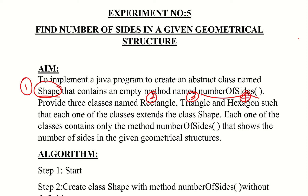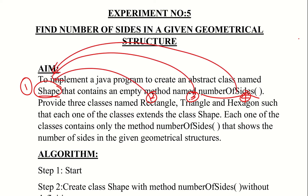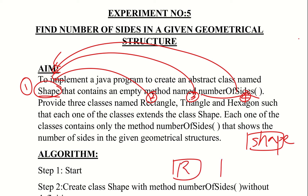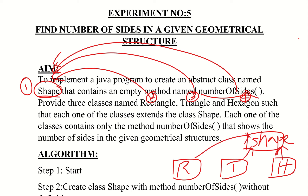We provide three classes named Rectangle, Triangle, and Hexagon, such that each one of the classes extends the class Shape. So Shape is the base class or parent class, and Rectangle, Triangle, and Hexagon are the child classes.